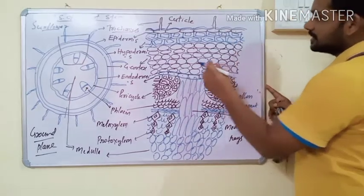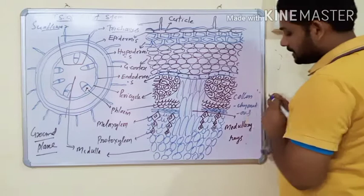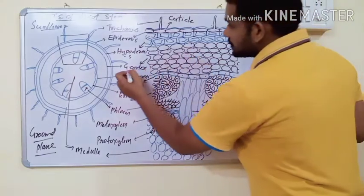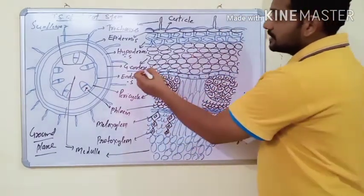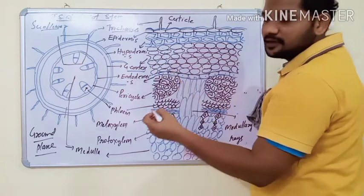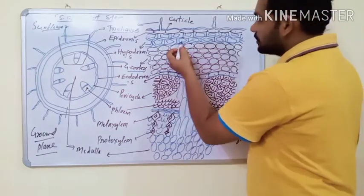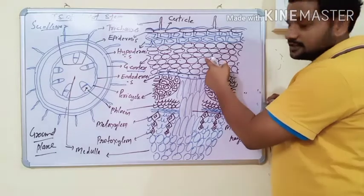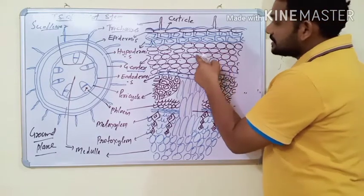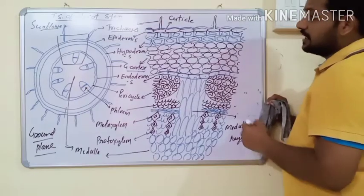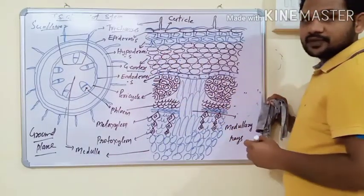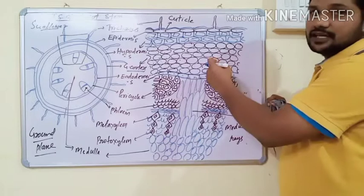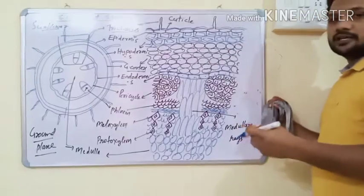Below the hypodermis, few to many layers of parenchyma cells are present, and this tissue is known as general cortex. General cortical cells are made up of parenchyma and have intercellular spaces. Some cells also possess chloroplasts, which help in food synthesis. Usually, the general cortex helps in slow conduction of water, minerals, and food material.